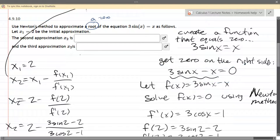Now we're all set to apply Newton's method. Our function is the left side of the equation right here. So we let f(x) equal 3 sin x minus x. We're going to solve f(x) equals zero, which is exactly this equation, using Newton's method.